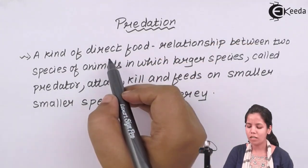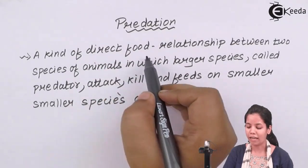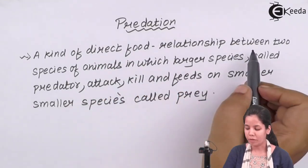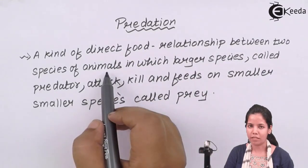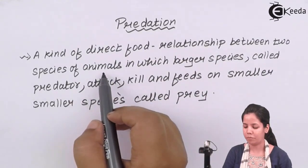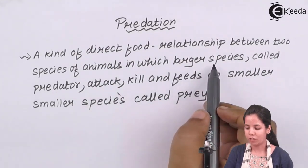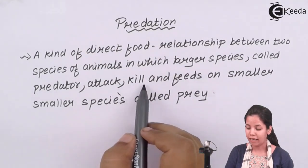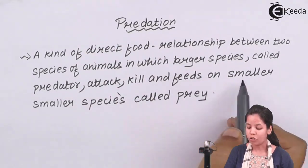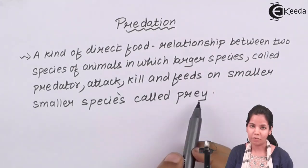Predation is nothing but a kind of direct food relationship between two species of animals. It could be same species or different species, in which the larger species called as predator attacks, kills and feeds on the smaller species called as prey.